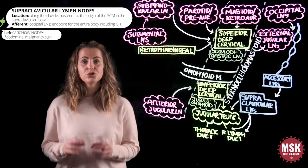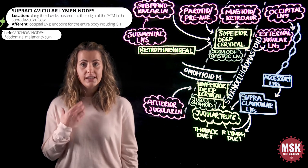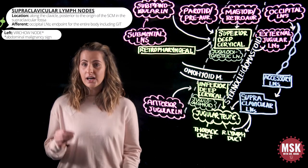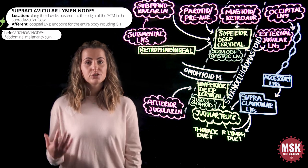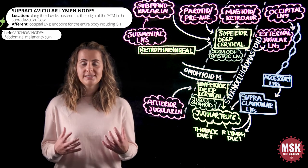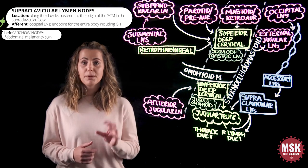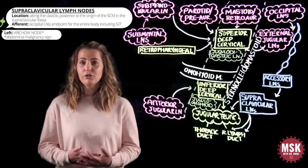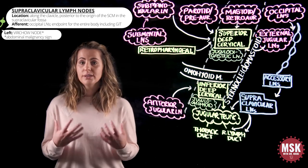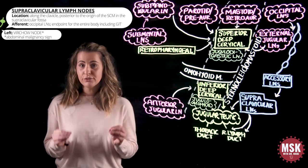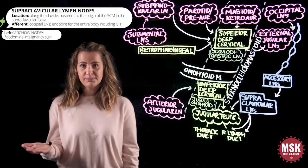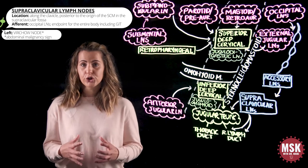Of clinical significance, the supraclavicular node on the left side of the body is called Virchow's node, also known as Troisier's sign. A hard and enlarged Virchow's node may indicate a high risk of abdominal malignancy. A painless but palpable Virchow's node is suggestive of cancer — differentials include prostate, ovarian, breast, pancreatic cancer, or lymphoma — while a painful node is more suggestive of infection. A helpful mnemonic: cancer is painless while infection is painful when examining Virchow's node.